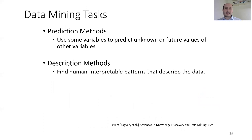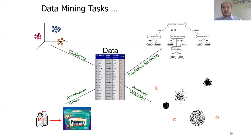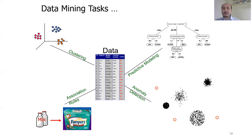There are mainly two different tasks in data mining. The first is prediction — using some variables to predict unknown or future values of other variables. The other is description — finding human-interpretable patterns that describe the data. Four application areas include predictive modeling, clustering, association rules, and anomaly or outlier detection.